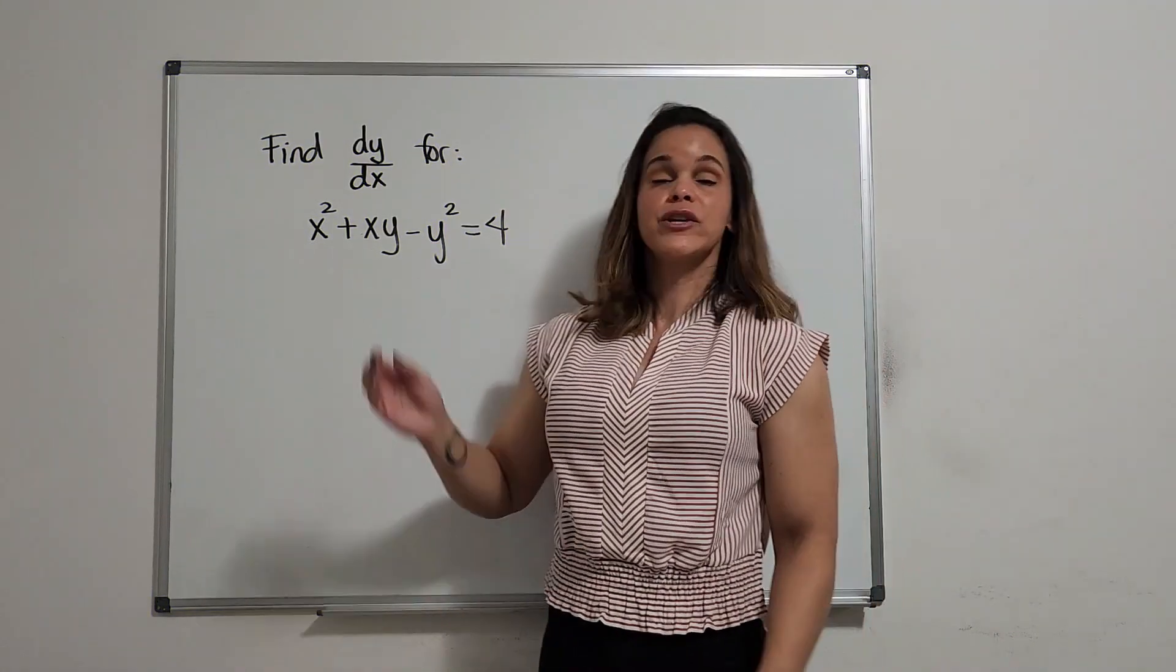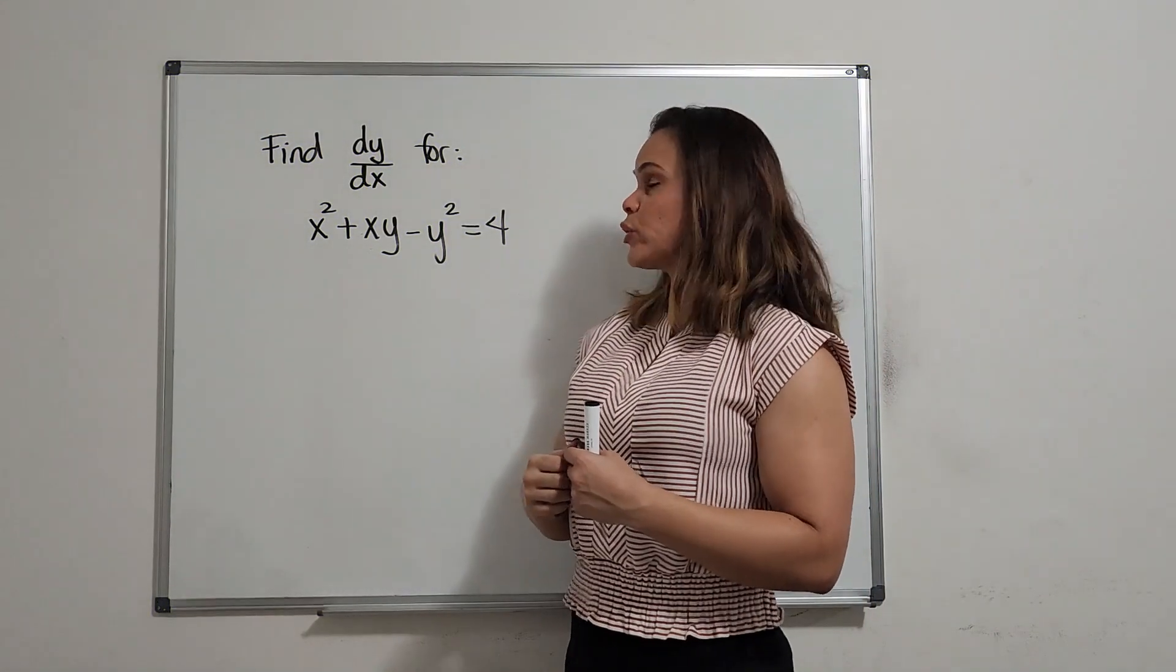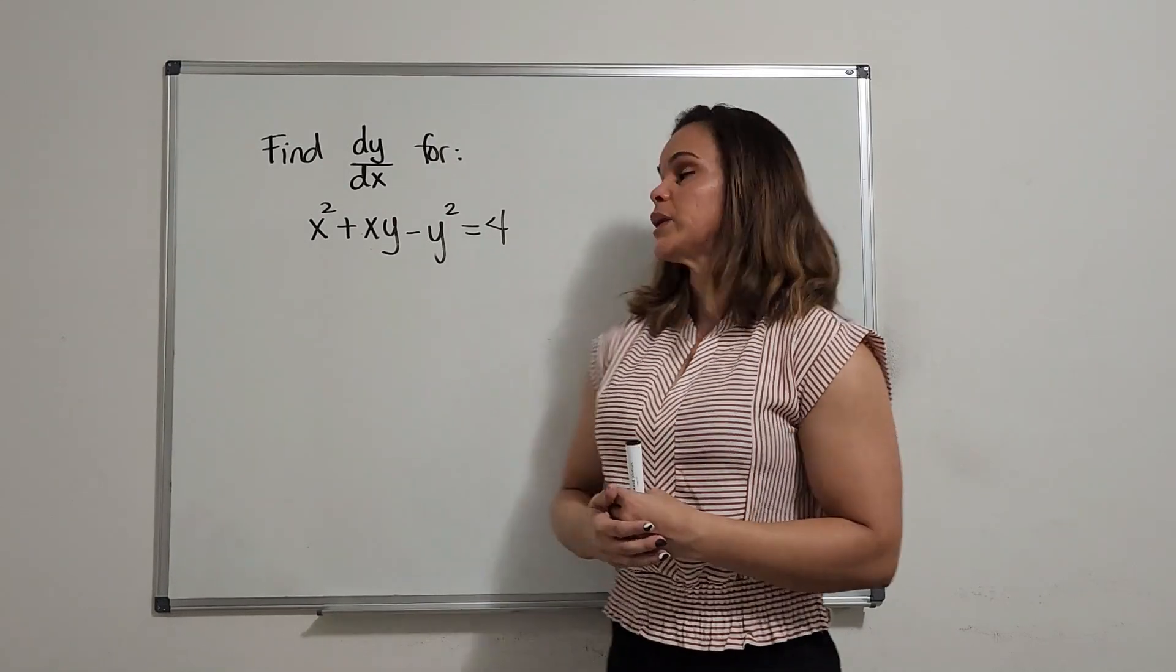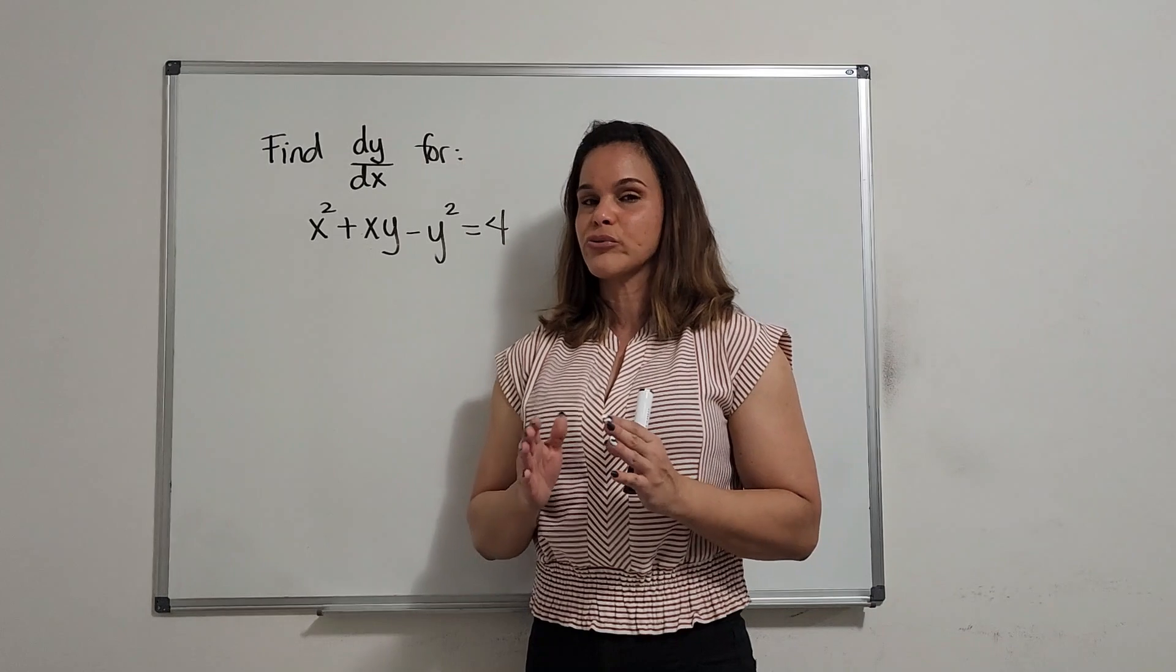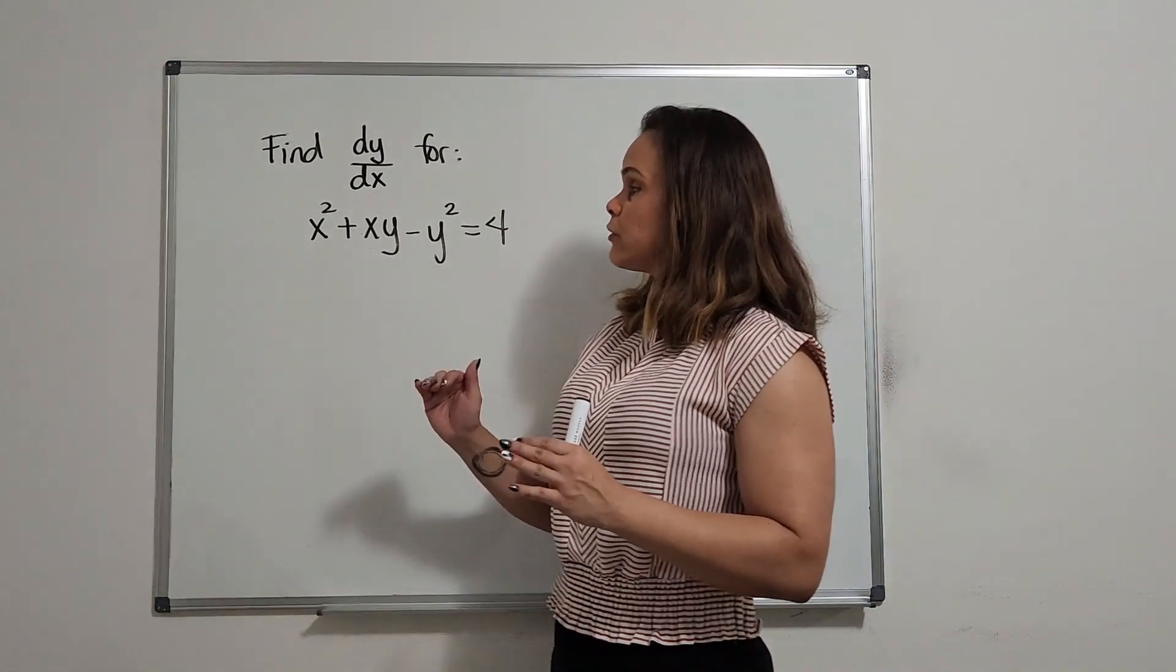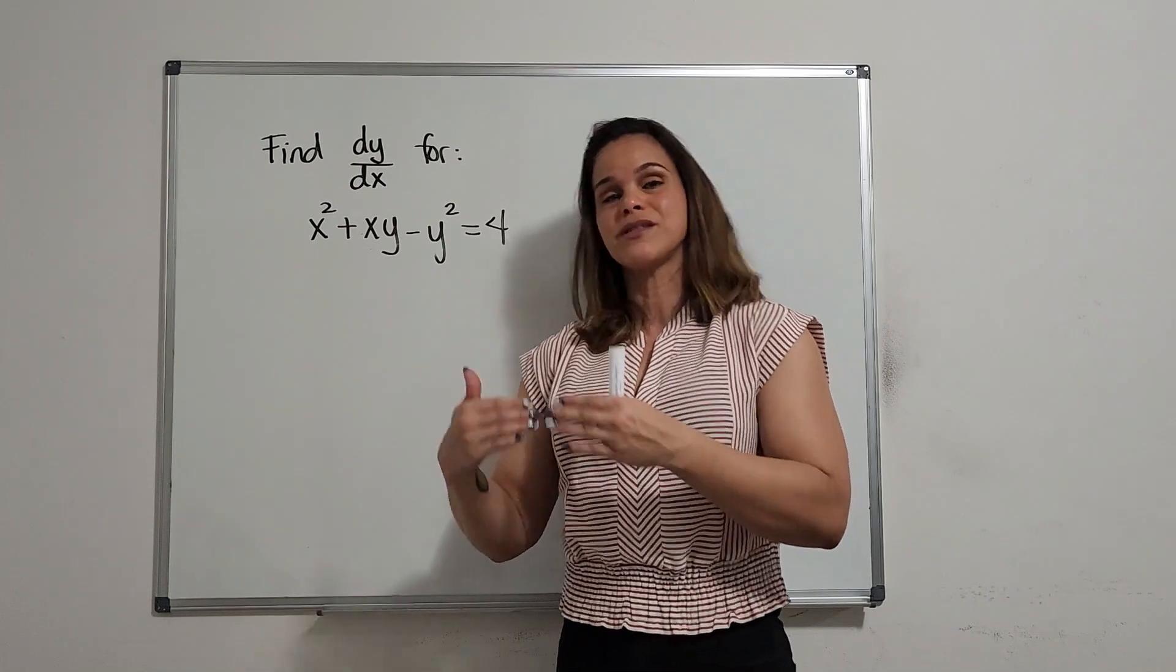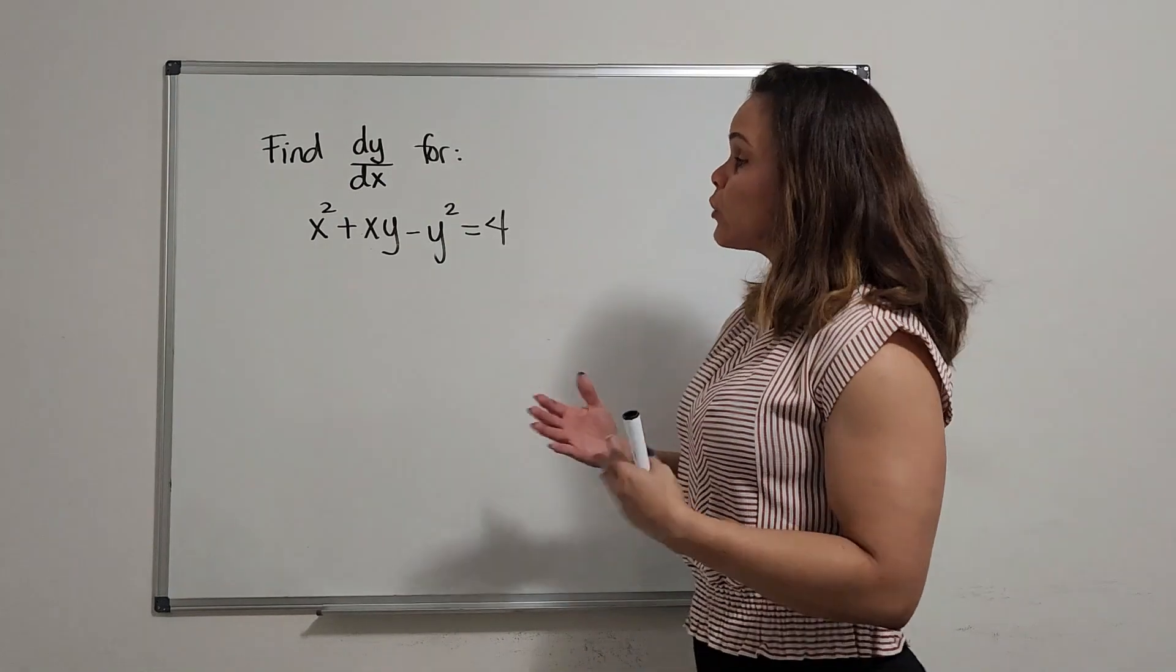We have here an equation in implicit form. We know it's in implicit form because we have a mix of variables in the equation, and it's not going to be too friendly to try to solve for y. So therefore we just go ahead and differentiate as it is. That's why it's called implicit differentiation.